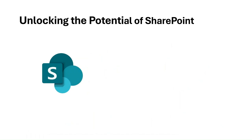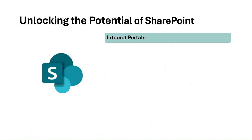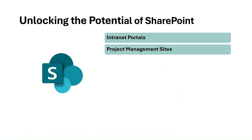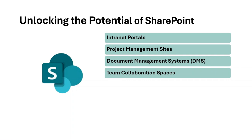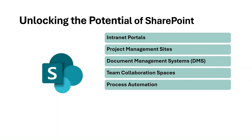Now that we know what SharePoint can do, let's look at some common ways organizations use it. They use it for intranet portals — many companies use SharePoint as their internal website, a central hub for company announcements, policies, and HR resources. If you manage projects, SharePoint can help you track tasks, deadlines, and progress reports in one place. For document management systems, SharePoint is fantastic for organizing business-critical documents with features like version control and permissions. Team collaboration spaces provide dedicated workspaces for teams to store shared files and track discussions. And for process automation, you can automate tasks like leave approvals, expense reimbursements, and document approvals.